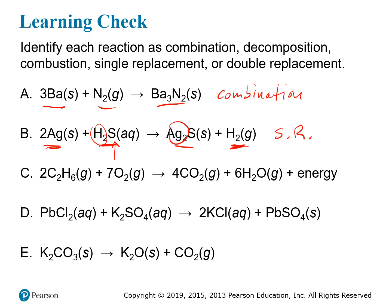The next example is a carbon-hydrogen compound plus oxygen yielding carbon dioxide, water, and energy. This is combustion — it has all four required components: a carbon-hydrogen fuel source, oxygen, CO2, and H2O. The energy is sometimes left off, but the other four material components must be present.